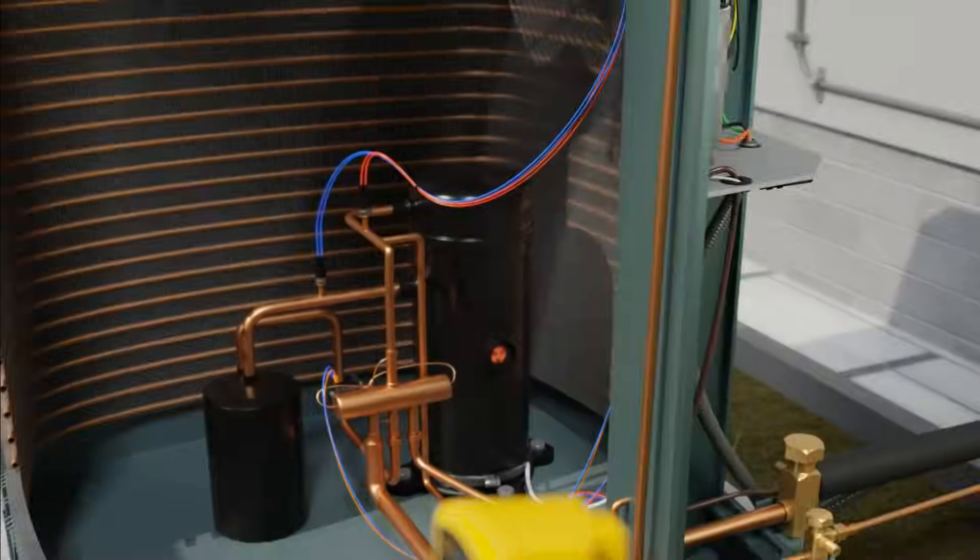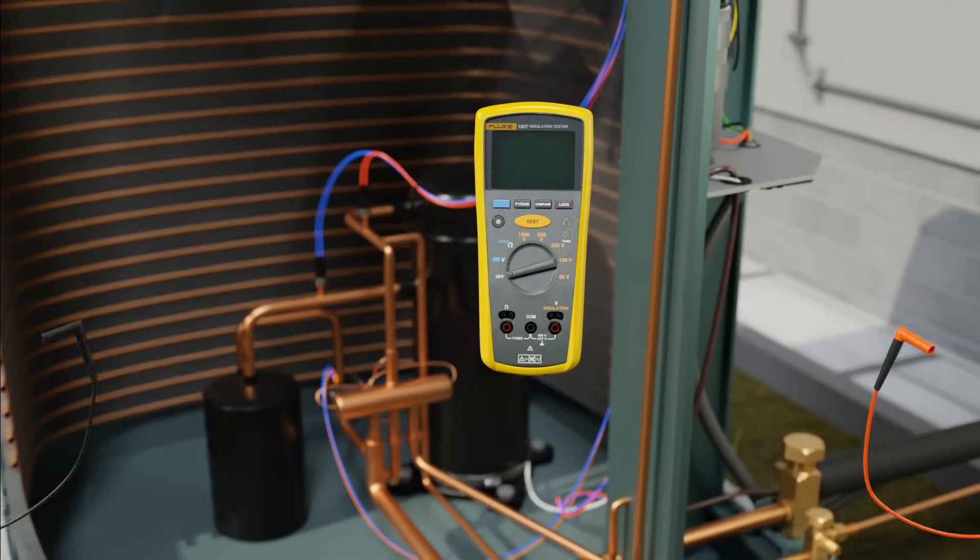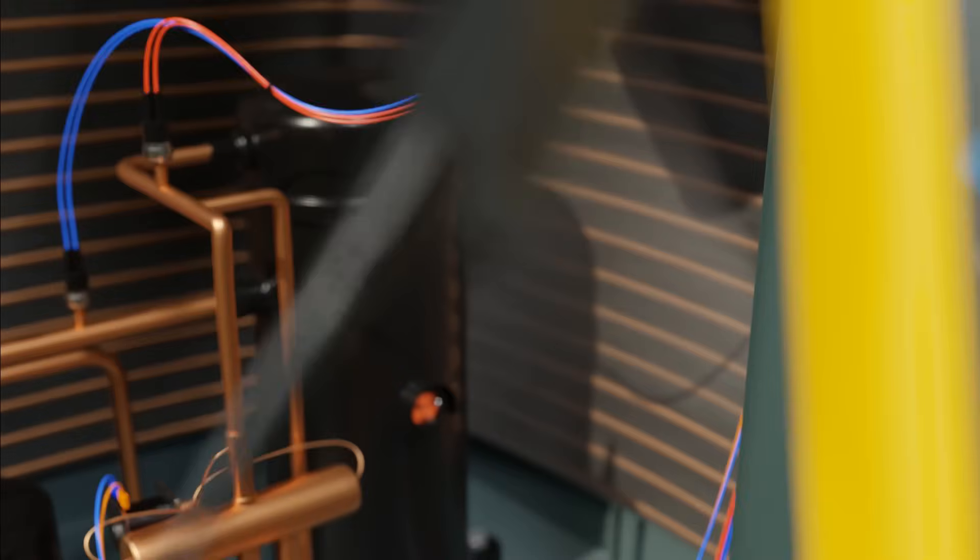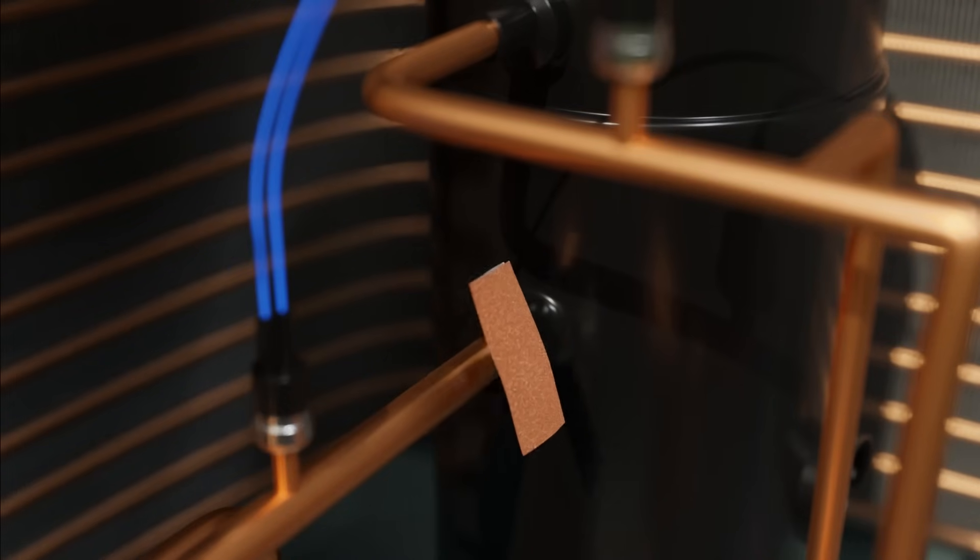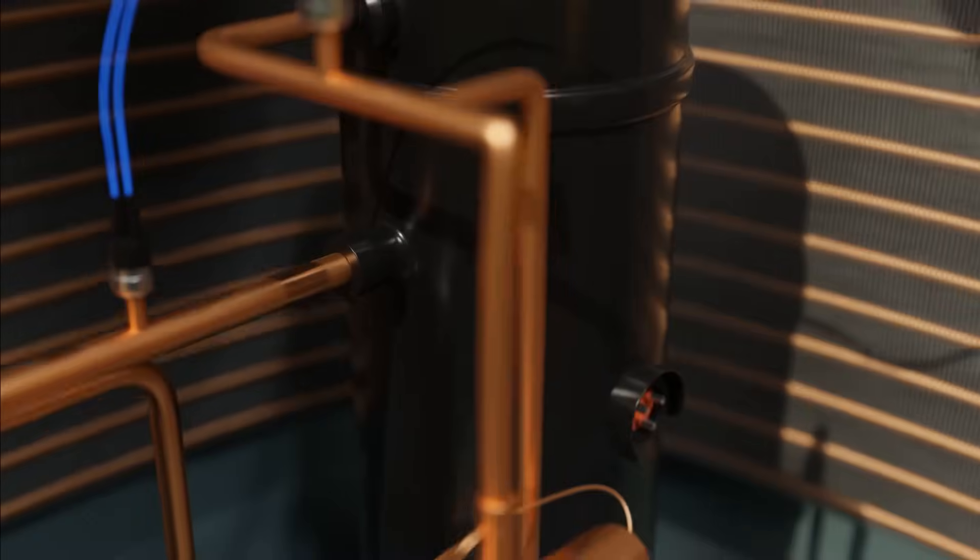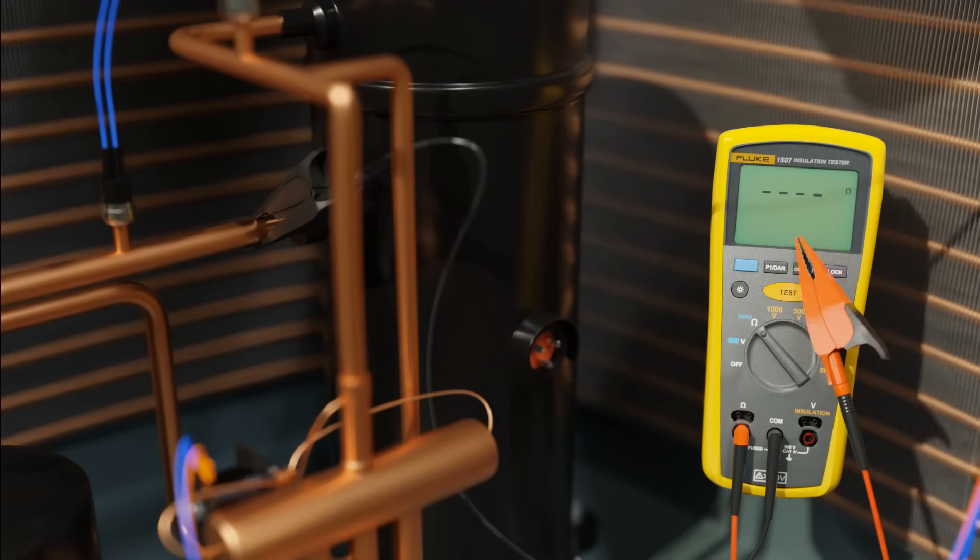Now, measure resistance to ground from each terminal. Usually, you're going to do this from terminal to the suction or discharge line on the compressor. You can use a megaohm meter or other quality multimeter.